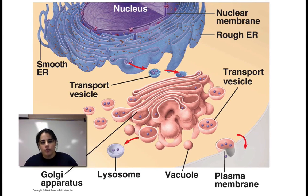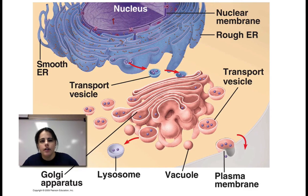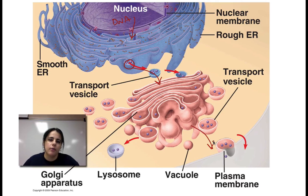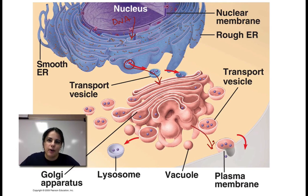All cell parts work together in order to make proteins. The instructions are found in the nucleus with the DNA. The DNA instructions go out to the ribosomes. The ribosomes make the proteins, which get shipped out to the Golgi. The Golgi packages them and ships them out to different places in or outside of the cell where they need to go. So it all works together like a well-oiled machine. I hope this was helpful, and I hope you remember the different parts of a cell.